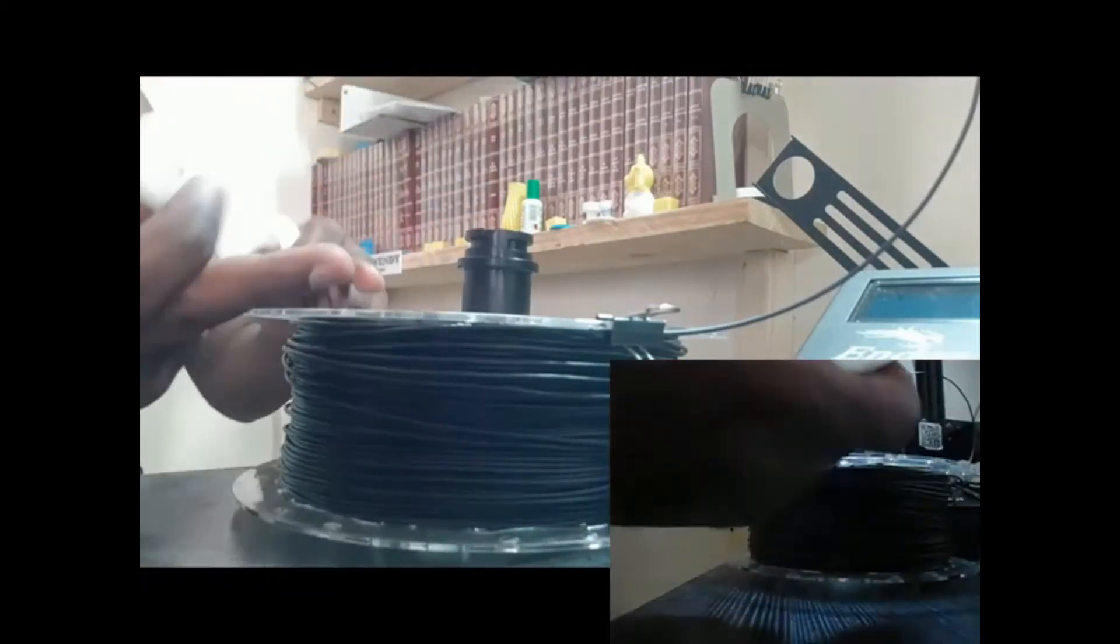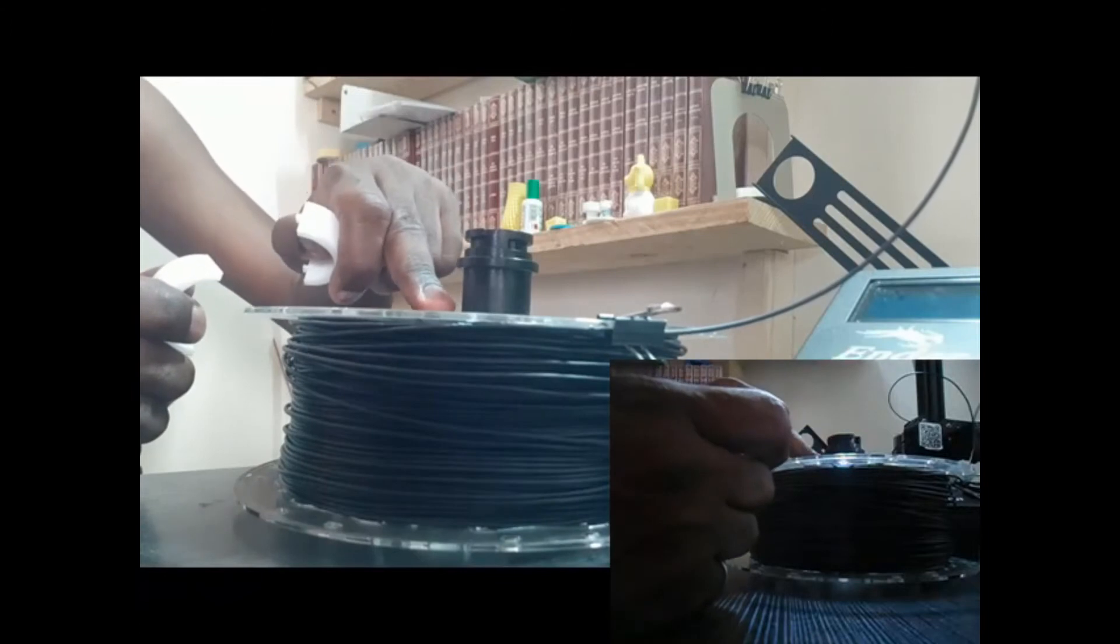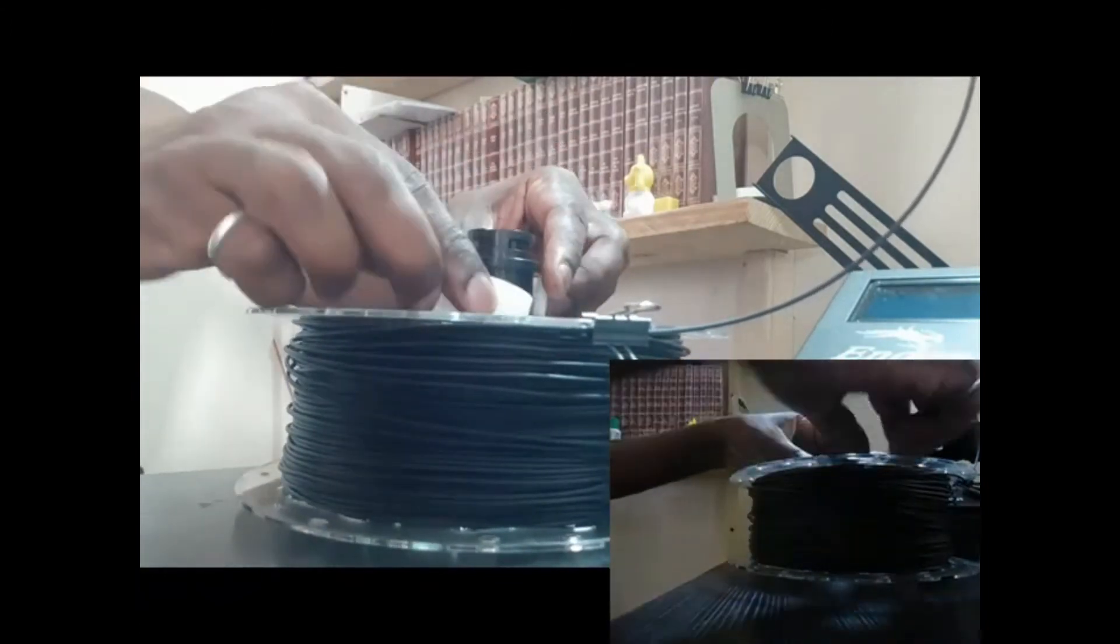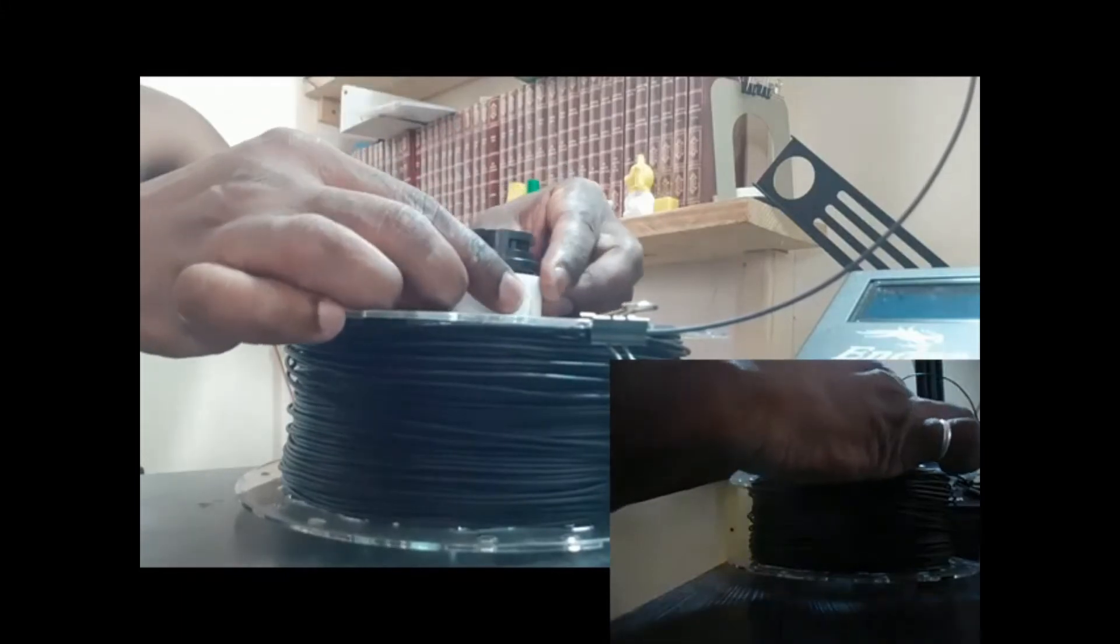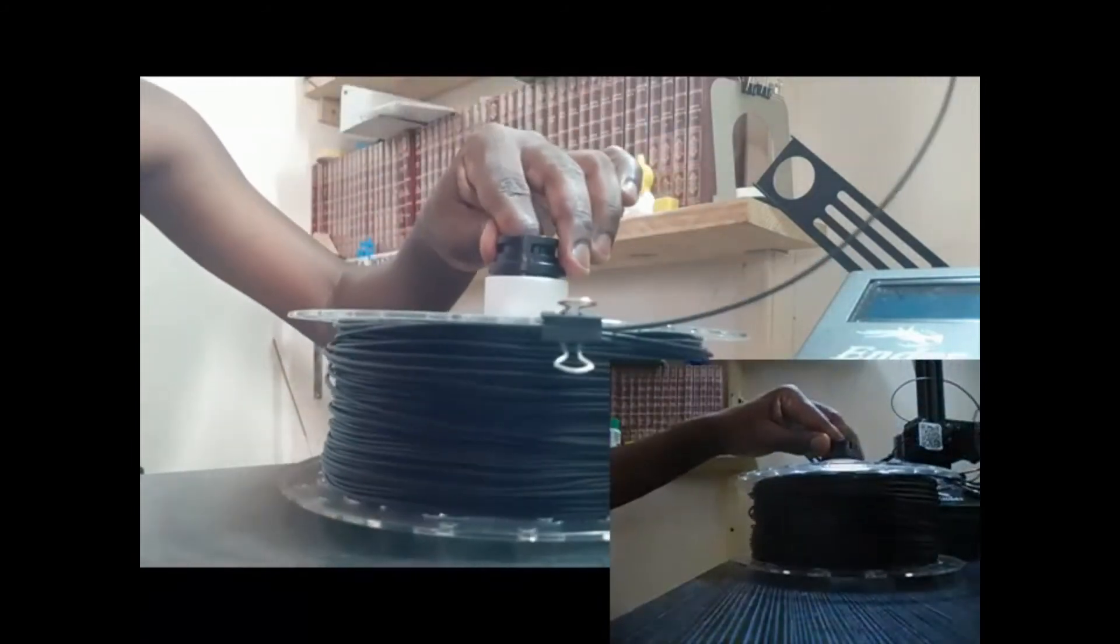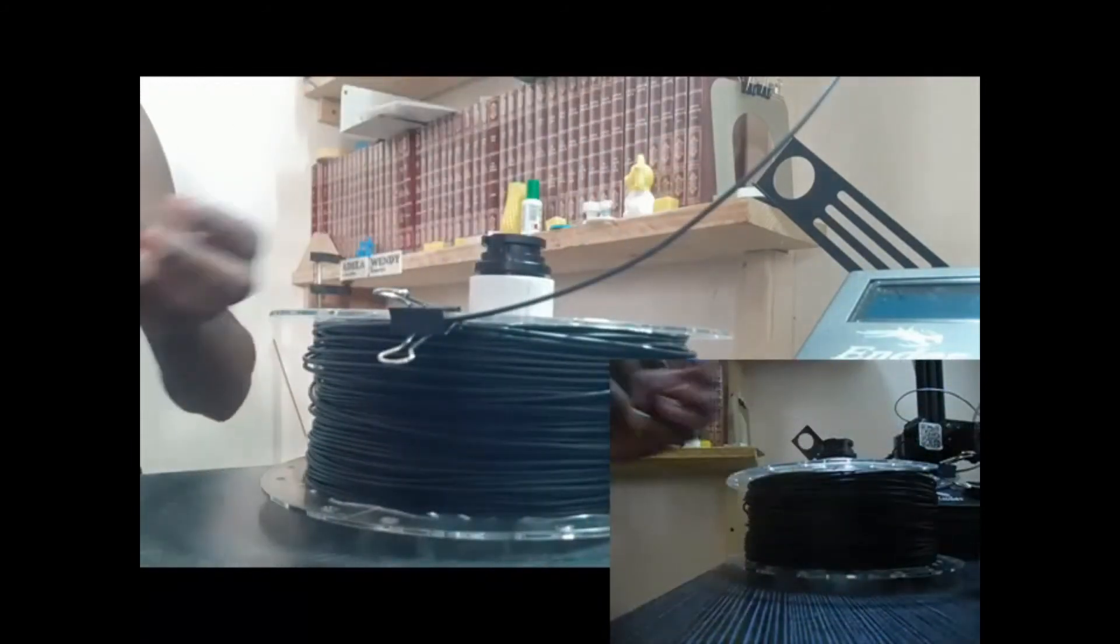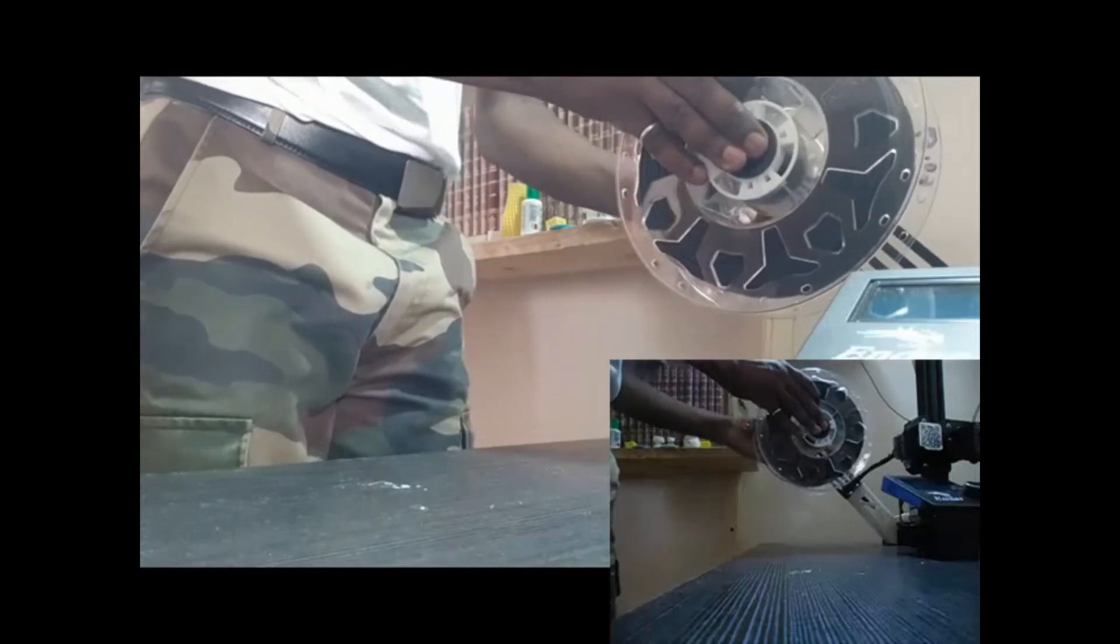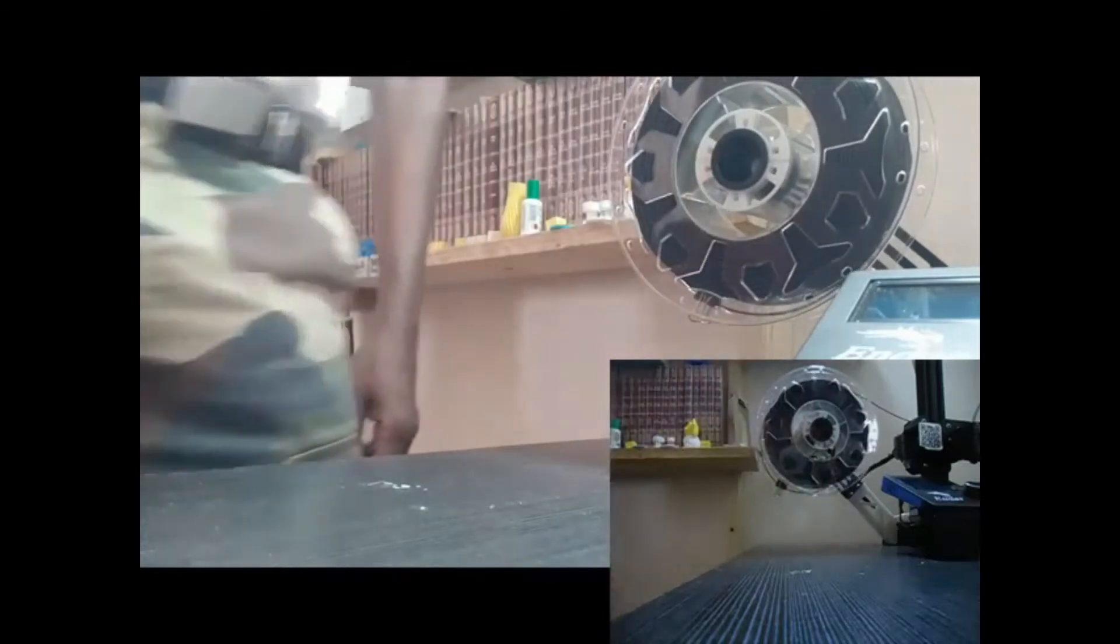This will prevent the spool from moving from this part to this part because of this space. I just place it, then I press the clip. Okay, now I can mount my spool back and that's all. Here we go.